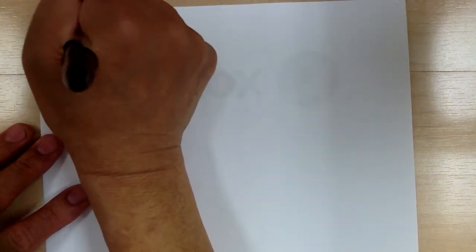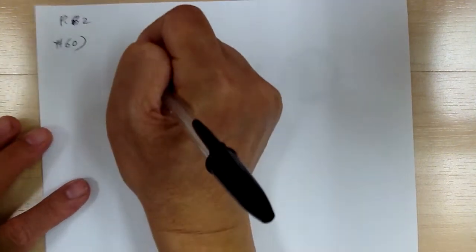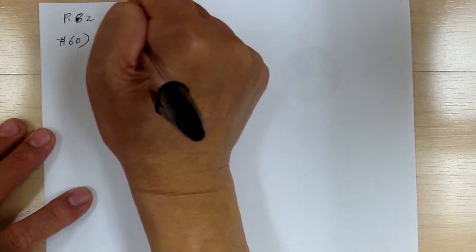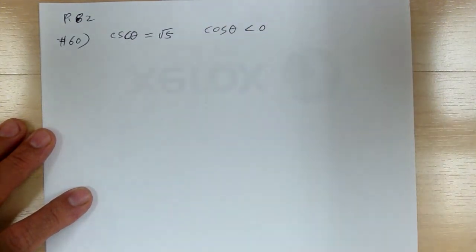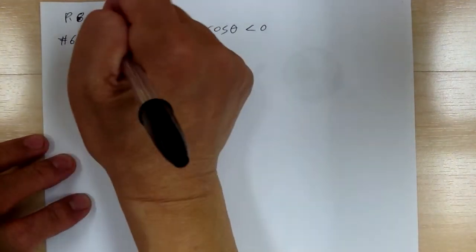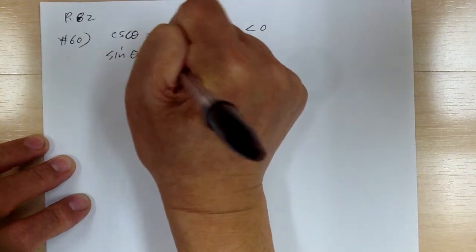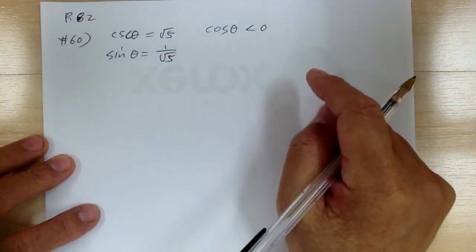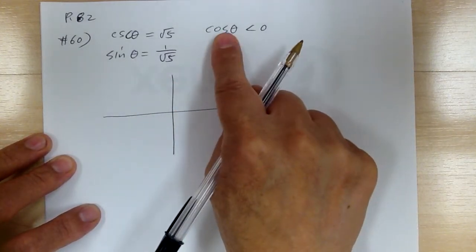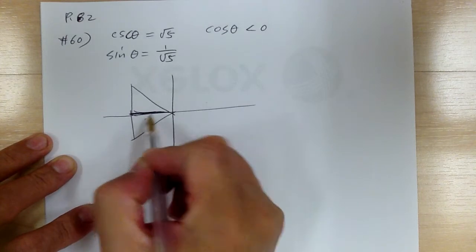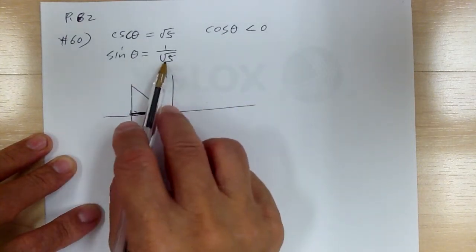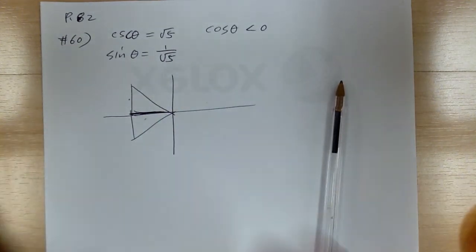Number 60: cosecant theta equals √5 and cosine theta is less than 0. If you're not comfortable with the secondary function, you can convert — cosecant comes from sine, so sine theta equals 1 over √5. Cosine less than 0 means the horizontal is negative, giving two possible triangles. Then sine is positive, meaning it's in the upper half, so the bottom quadrant is eliminated.